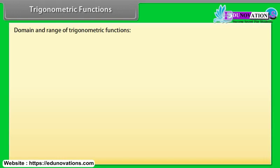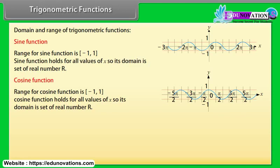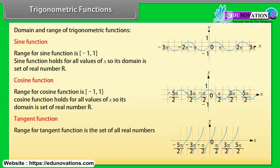Since an angle can be considered a real number, we denote the angle by x instead of θ. Sine function: range is [−1, 1]; domain is the set of all real numbers ℝ. Cosine function: range is [−1, 1]; domain is ℝ. Tangent function: range is all real numbers; domain is {x ∈ ℝ : x ≠ (2n+1)π/2, where n is any integer}.